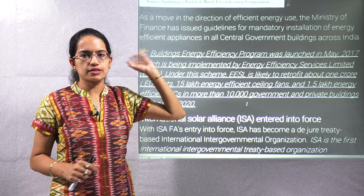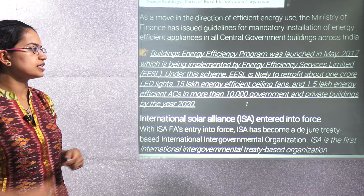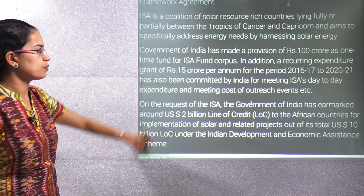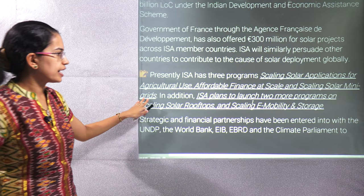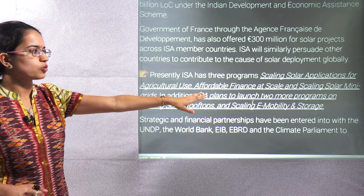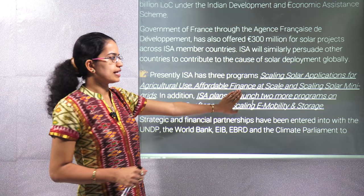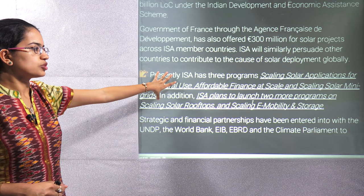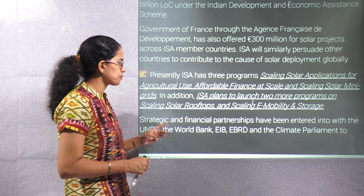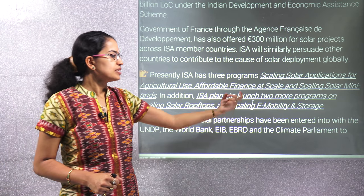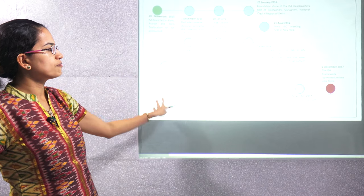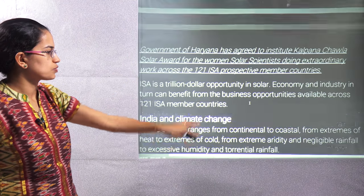The International Solar Alliance has three major priority programs: scaling solar applications for agriculture, affordable finance at scale, and scaling solar mini-grids. Two additional programs are solar rooftop and scaling e-mobility and storage. These represent the journey of the International Solar Alliance and the various developments that have taken place over the years.